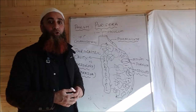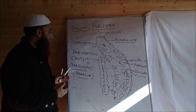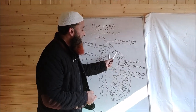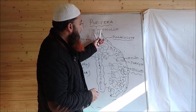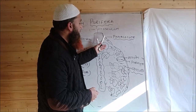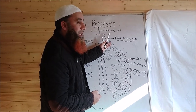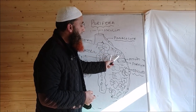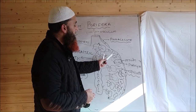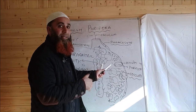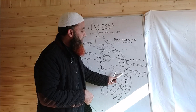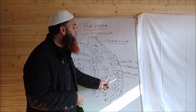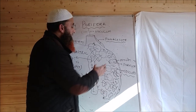From Phylum Cnidaria onward we have animals called true metazoans or Eumetazoa. To summarize the body wall: pinacoderm contains pinacocytes, choanoderm contains choanocytes, and in between them is the gelatinous mesenchyma which contains spicules and various types of amoeboid cells. There is also a modified pinacocyte known as a porocyte.